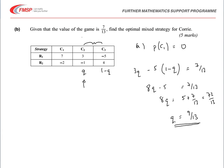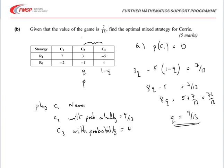And so the optimal mixed strategy for Corrie is to play C1 never, C2 with probability equal to 9 over 13, and C3 with probability equal to 4 over 13.